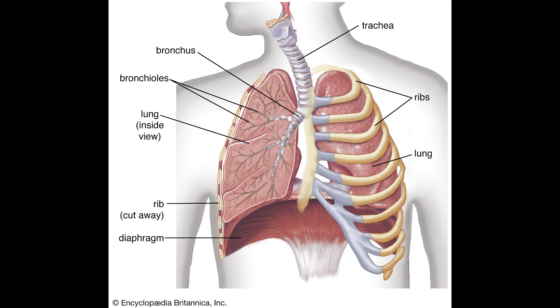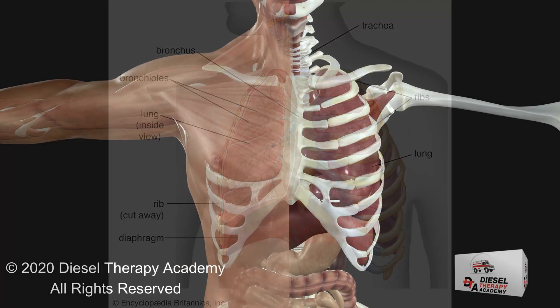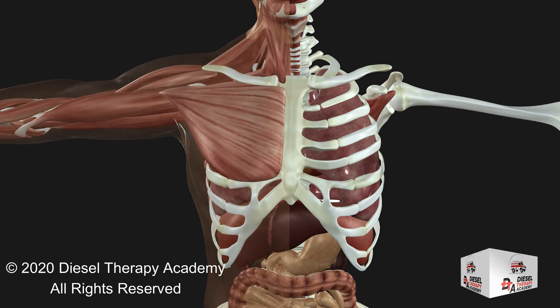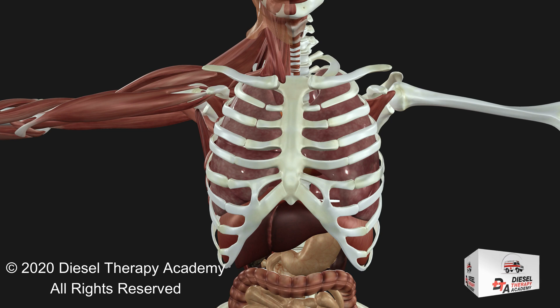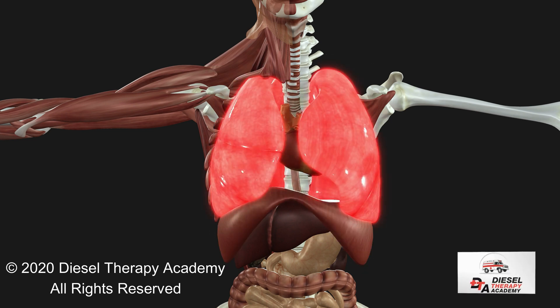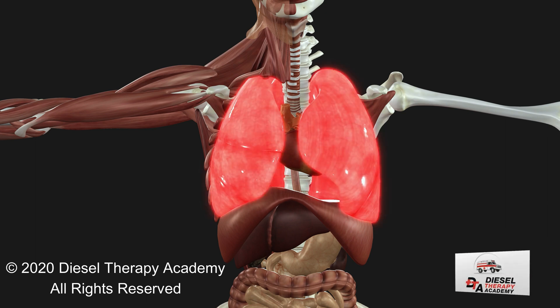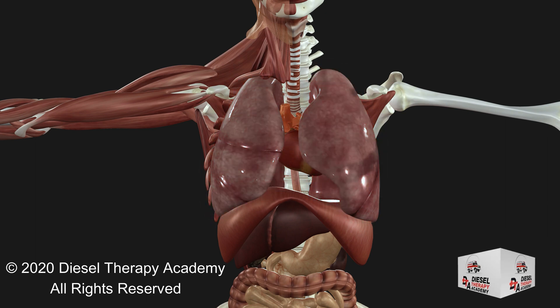The two lungs, which contain all the components of the bronchial tree beyond the primary bronchi, occupy most of the space in the thoracic cavity. The lungs are soft and spongy because they are mostly air spaces surrounded by the alveolar cells and elastic connective tissue. They are separated from each other by the mediastinum, which contains the heart. The only point of attachment for each lung is at the hilum or root on the medial side, where the bronchi, blood vessels, lymphatics, and nerves enter the lungs.